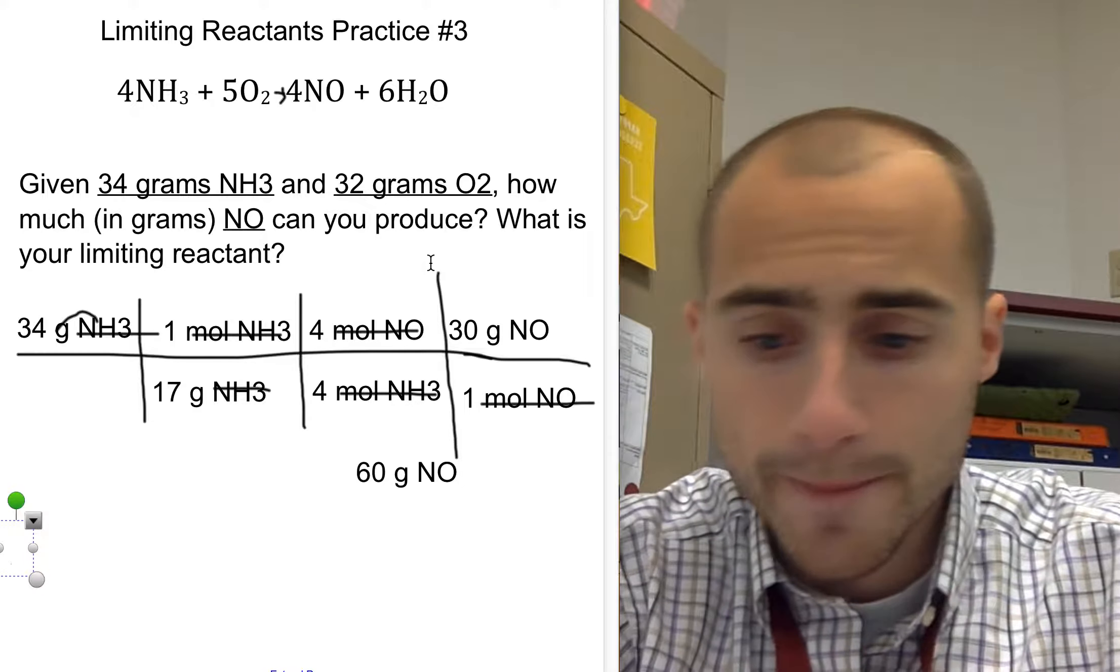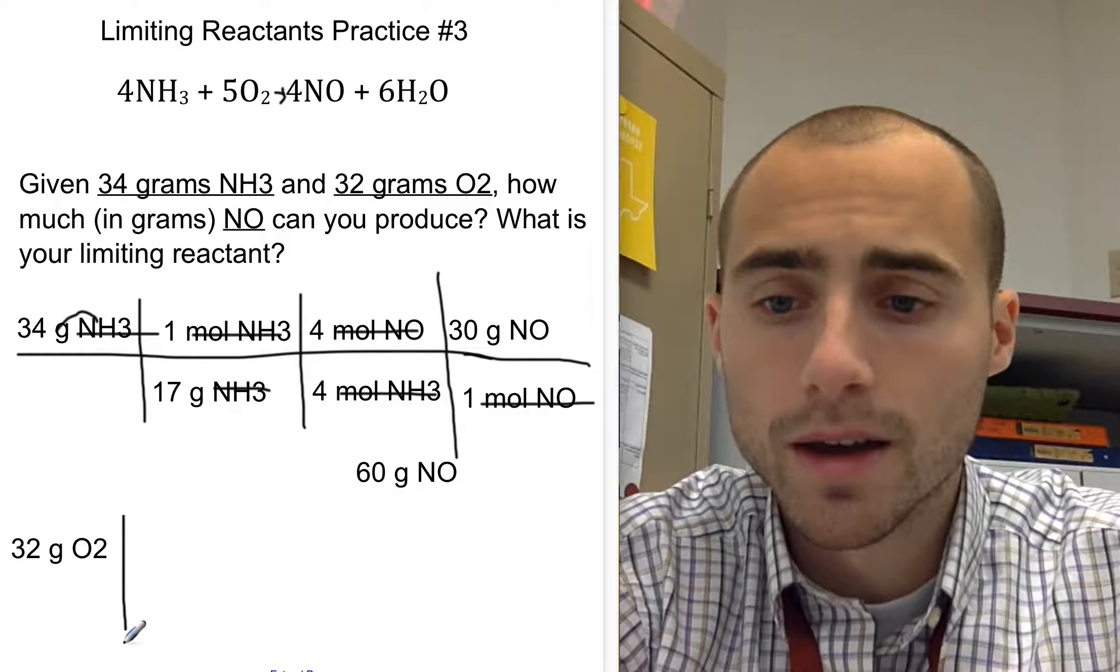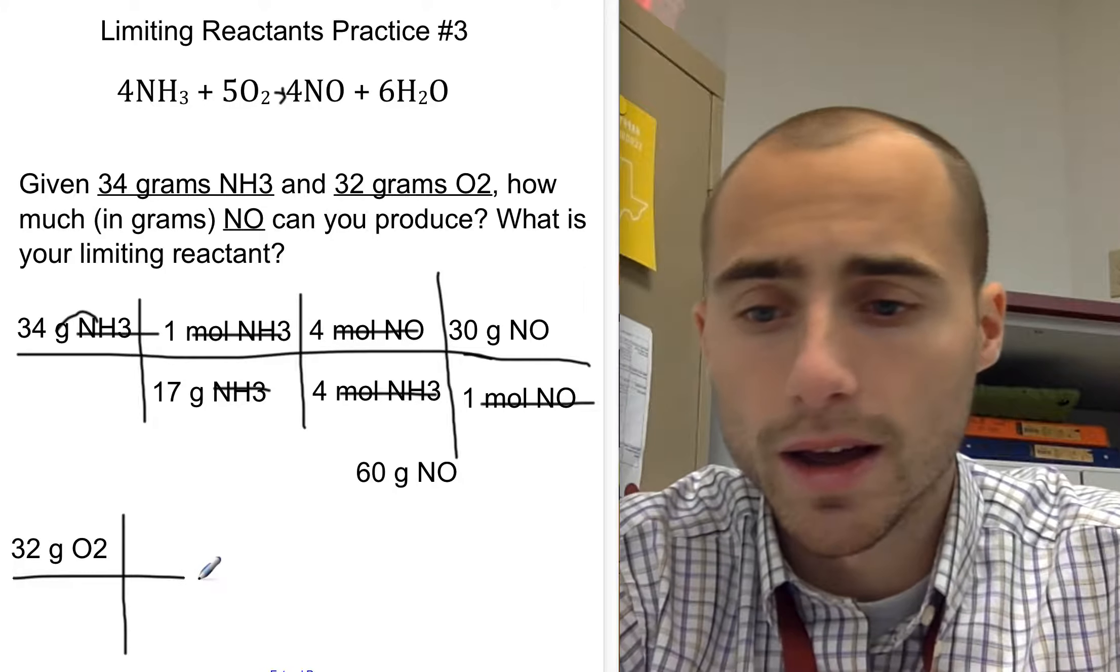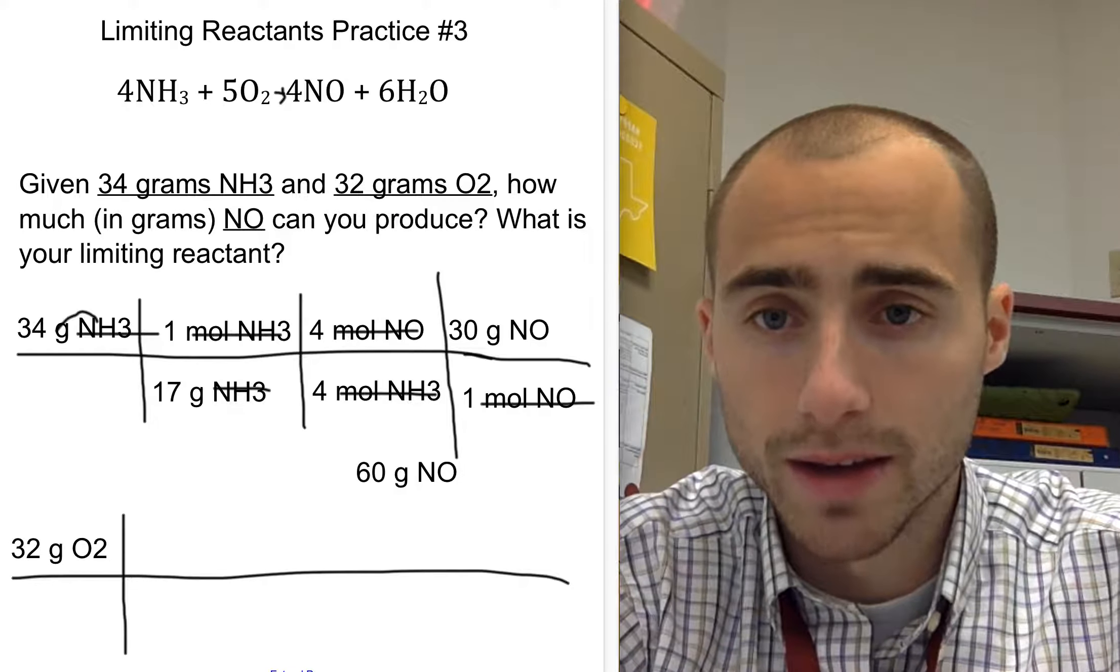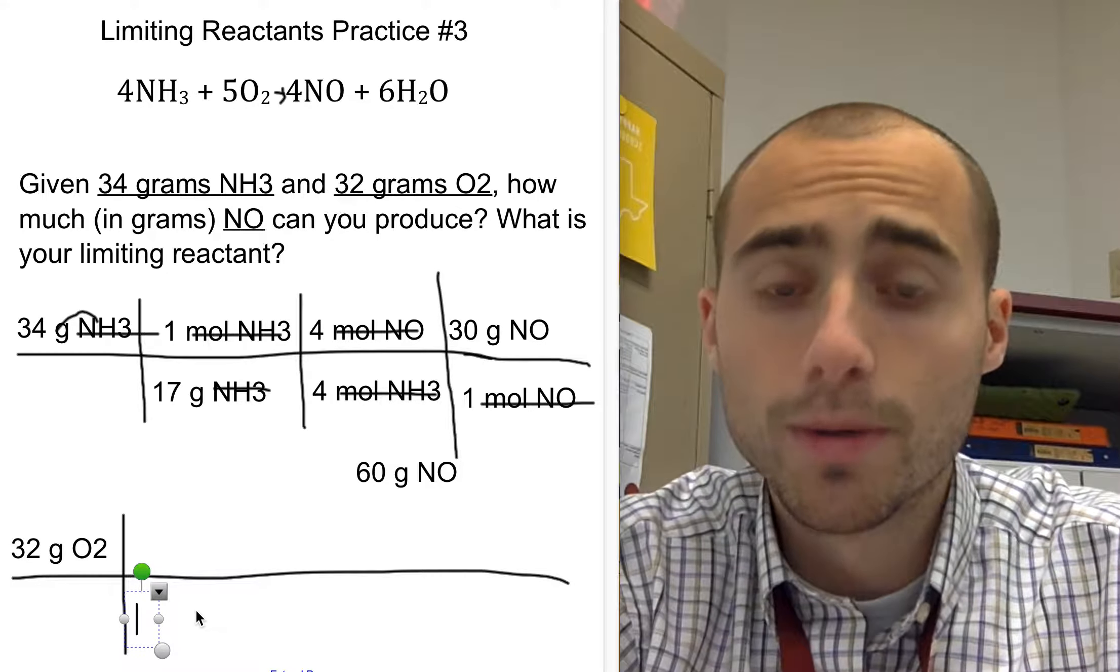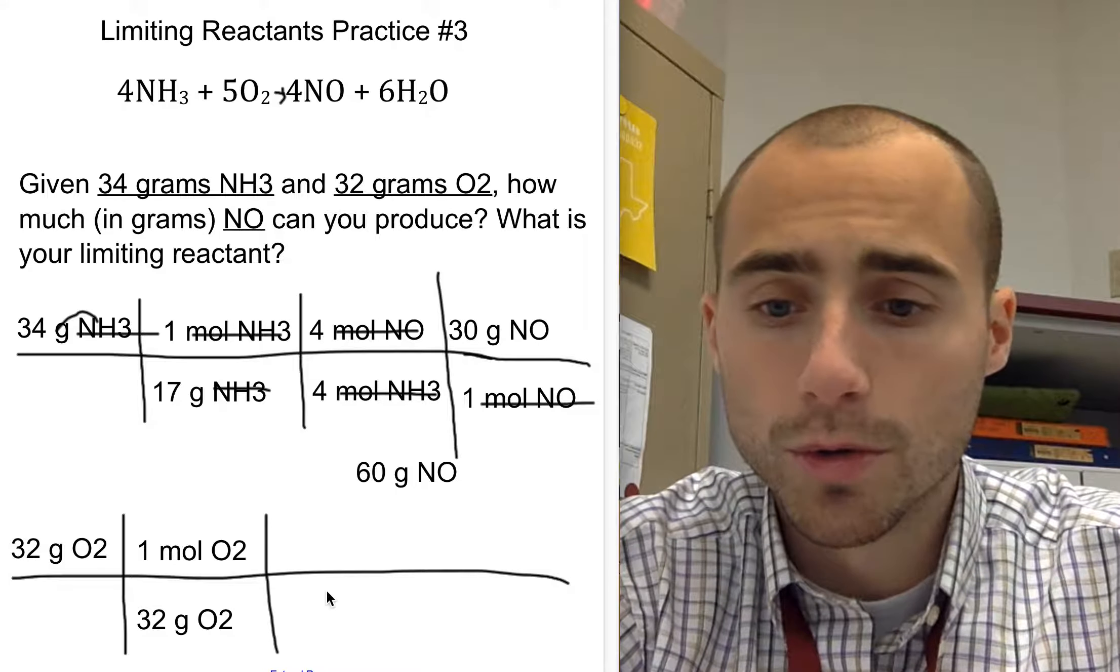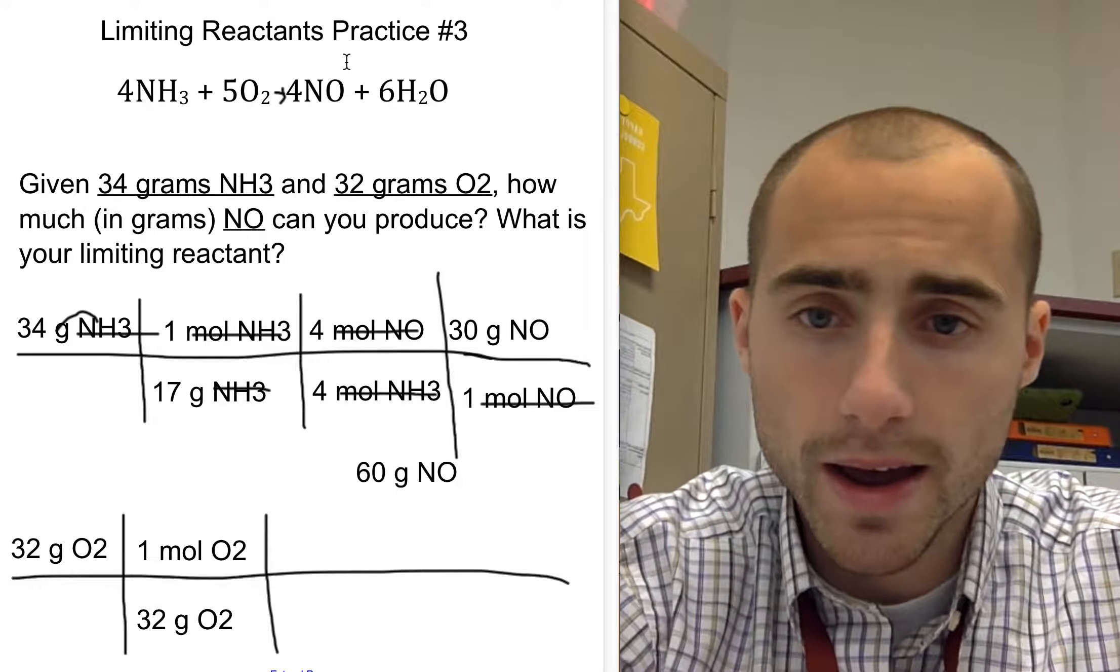So down here, I have 32 grams of O2 because that is my other reactant, and I have to convert this to grams to figure out which is my limiting reactant. So again, first you have to convert O2 to moles of O2. You have to do that with the molar mass. The molar mass of O2 is 32 grams, because there is two oxygens. Each has a mass of 16. So that equals one mole of O2.